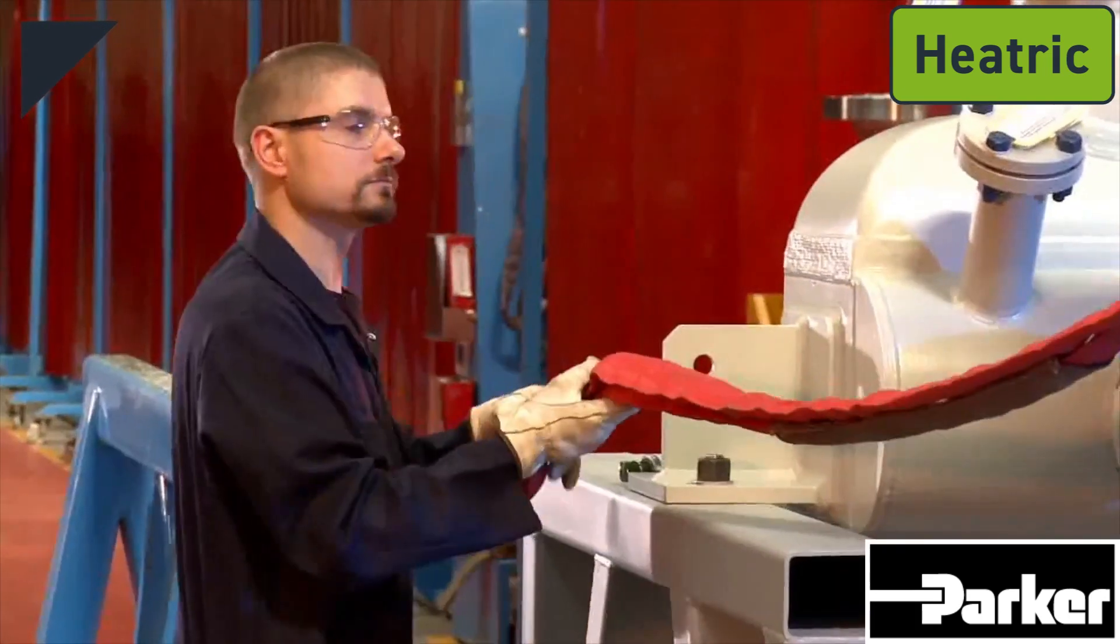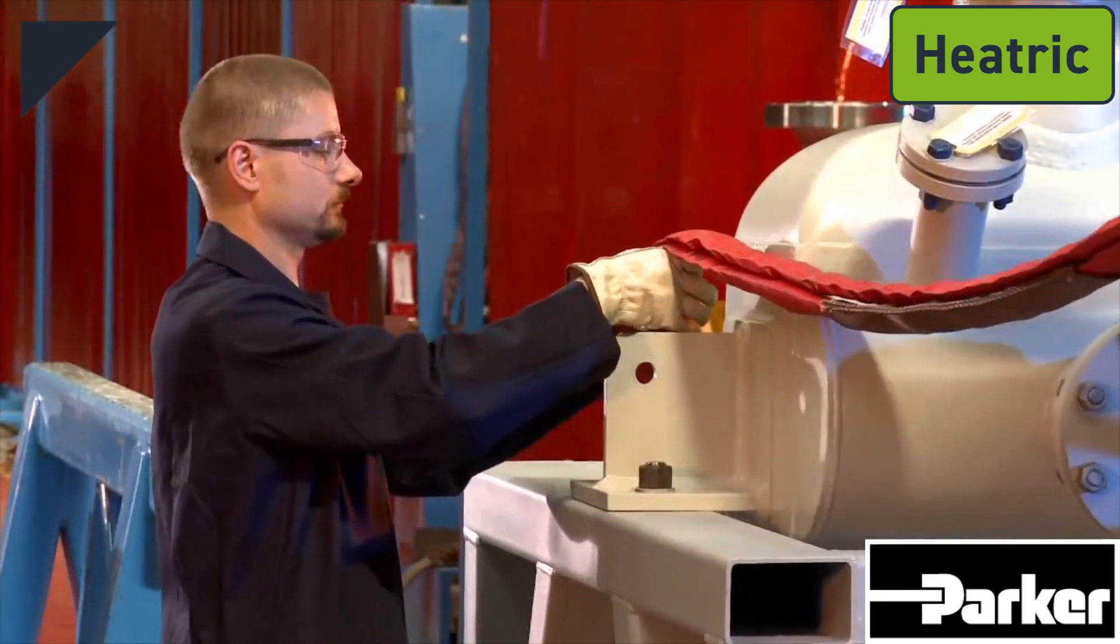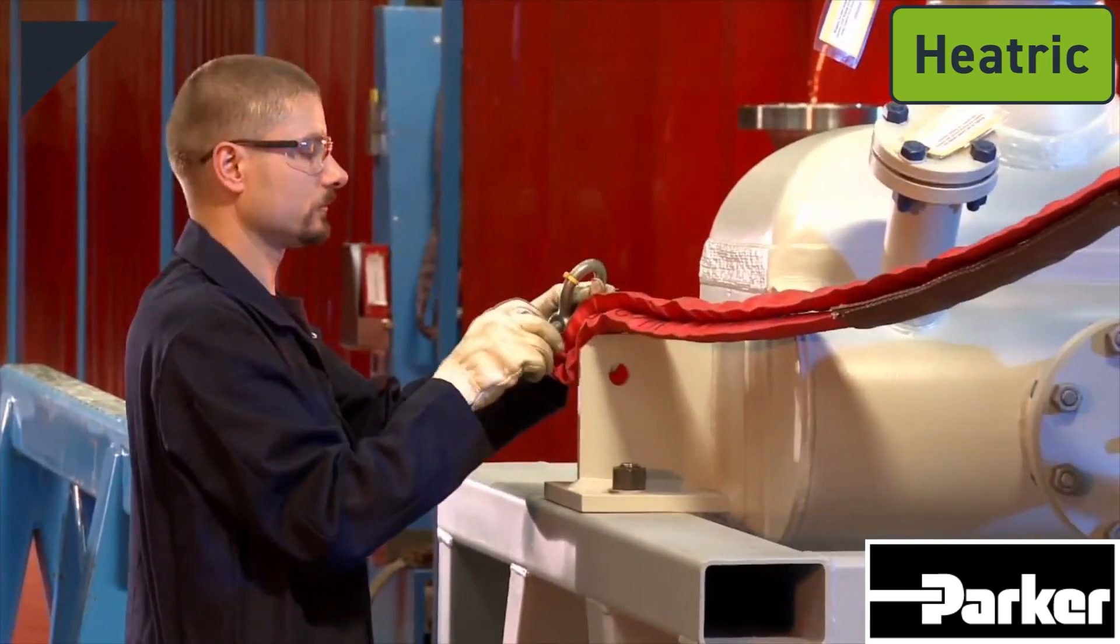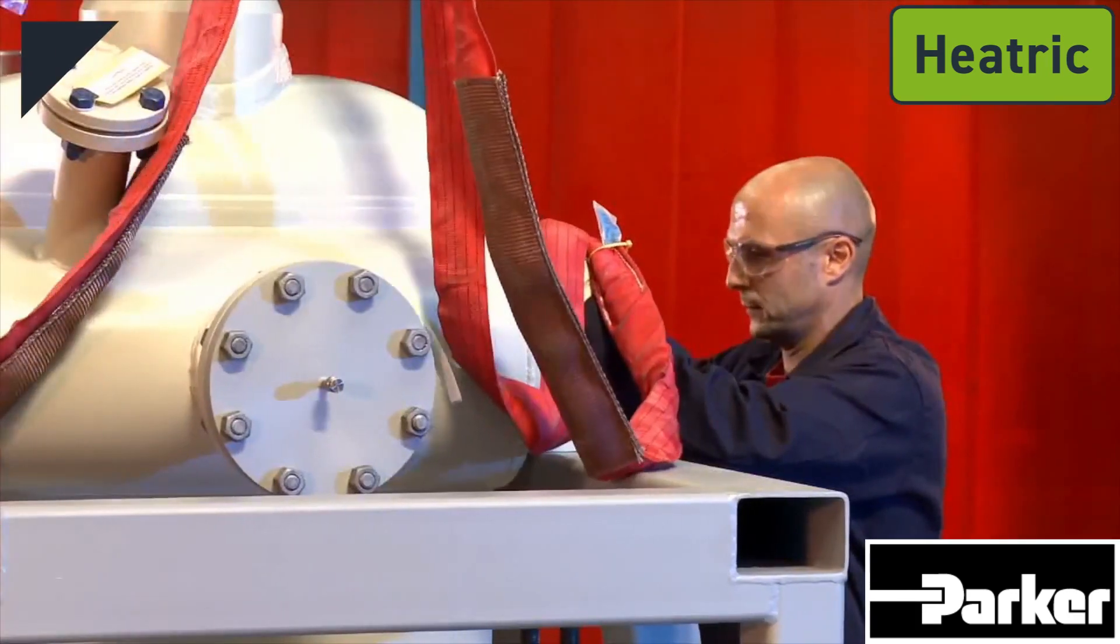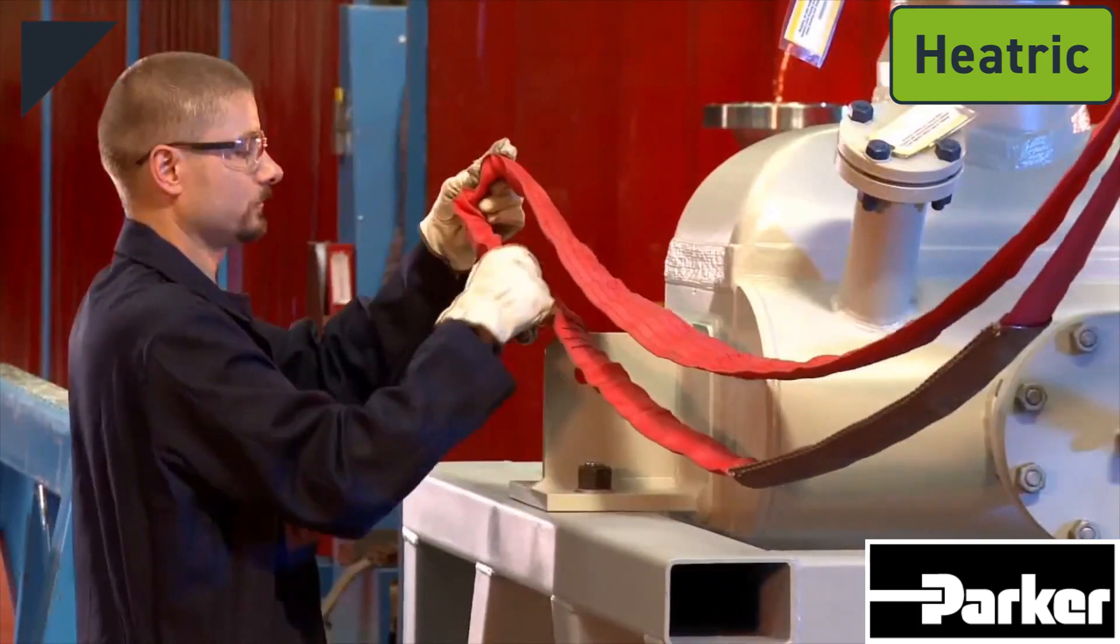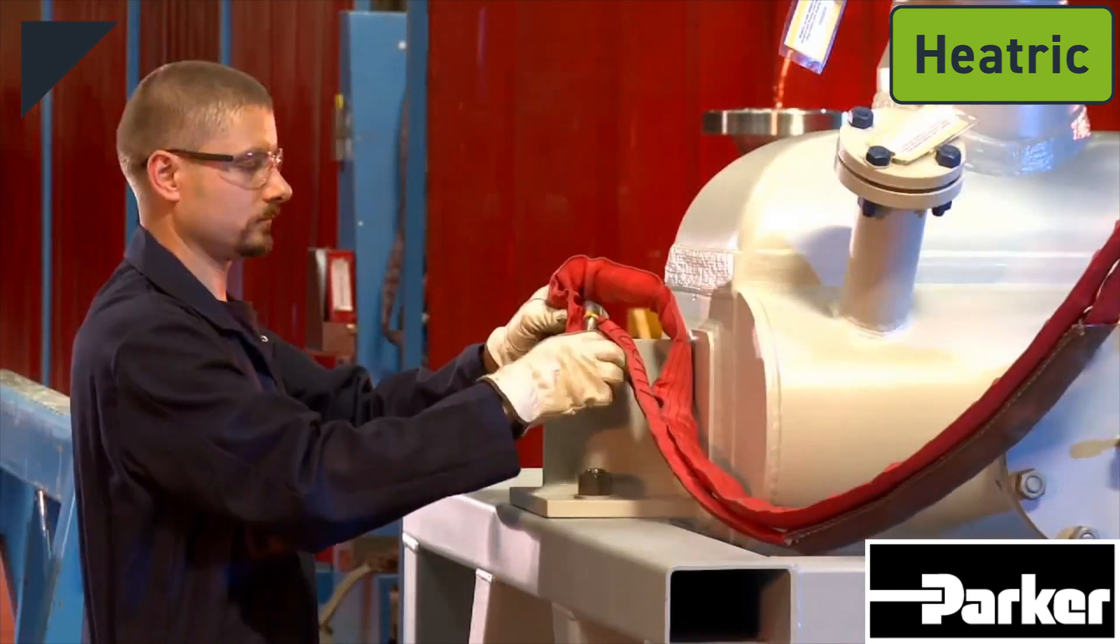Lifting lugs are typically located at each end of the exchanger and are suitable for fitting with D-shackles for the attachment of lifting slings or chains. The lifting points can be incorporated into the end-type supports.